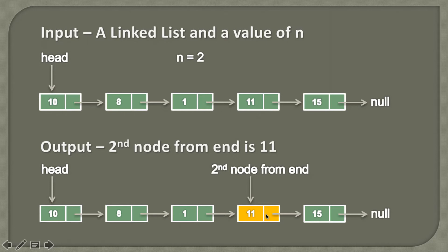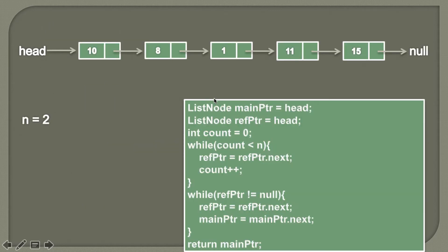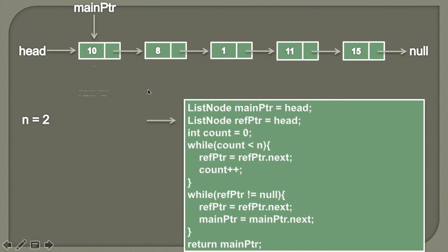Now let's see the demo of the algorithm and its working. Here is the linked list having the nodes as 10, 8, 1, 11, and 15. Suppose we are given the value of n is two, meaning we have to find the second node from the end. First we will create a main pointer which will be pointing to the head, and we will also create a reference pointer which will also point to the head, that is the first node.